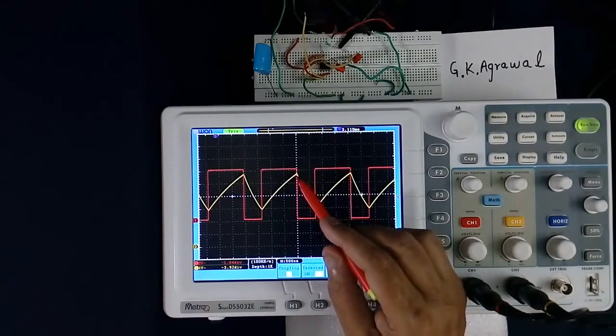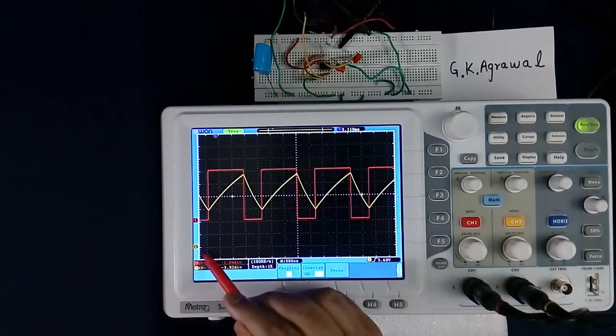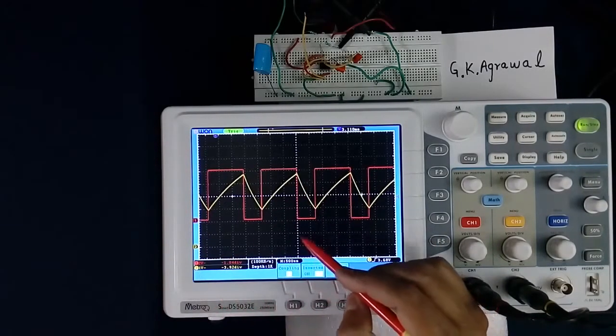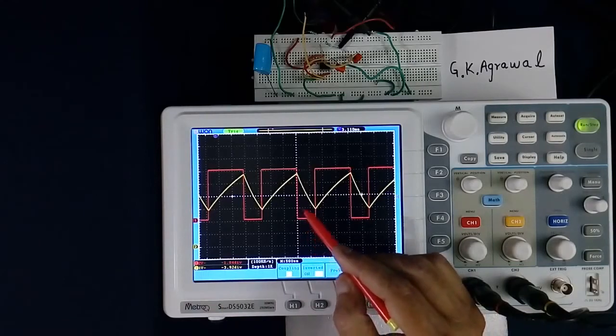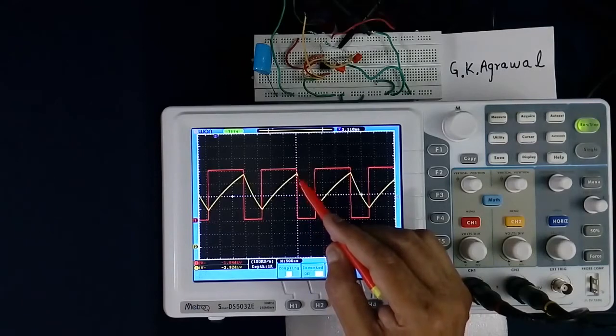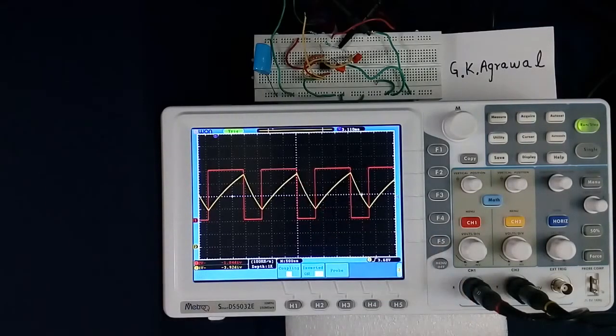Now voltage of this point, the yellow one. This is the zero line. It is 1 volt per division. So 1 volt, 2 volt, 3 volt, 4 volt, 5 volt, 5.2, 5.4, 5.6, 5.8. Like that we can measure.